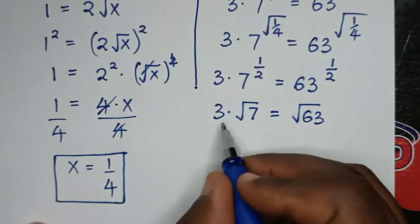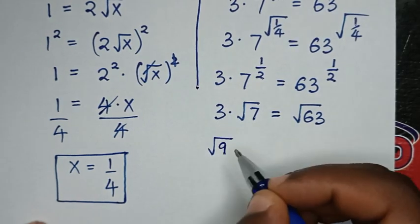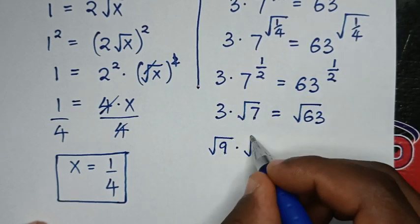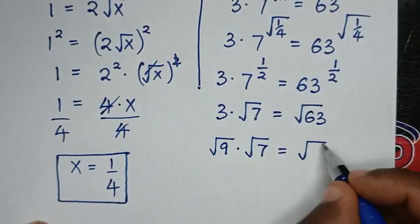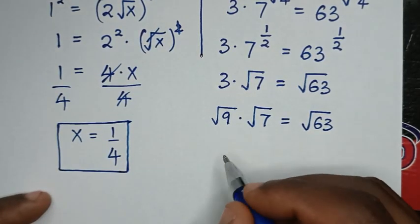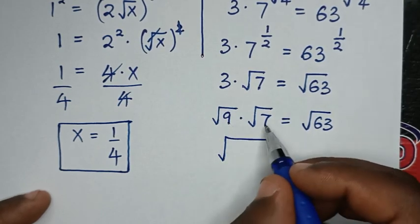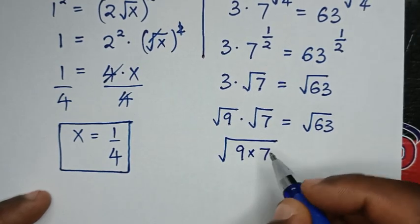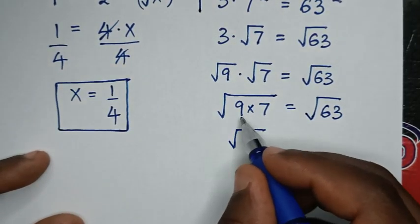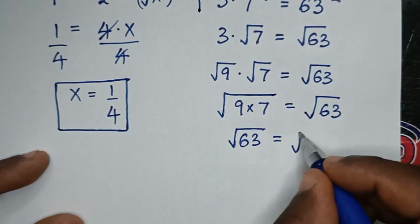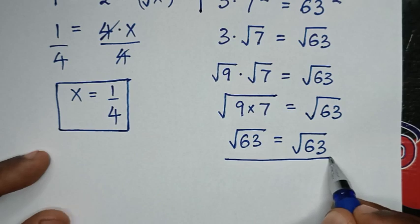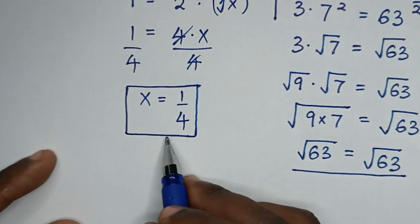In the next step, 3 is the same as square root of 9. So the left side is square root of 9 times square root of 7, which equals the common square root of 9 times 7. Since 9 times 7 is 63, we get square root of 63 equals square root of 63. The left side and right side are equal, confirming that x equals 1 over 4 is correct.